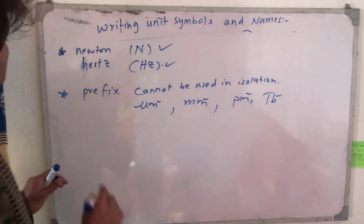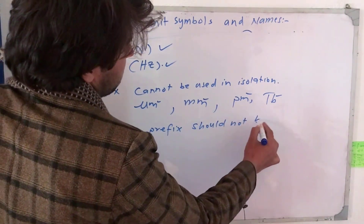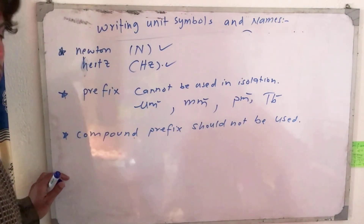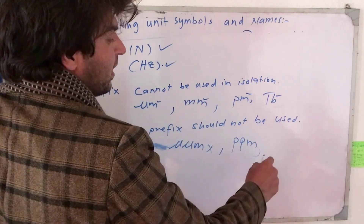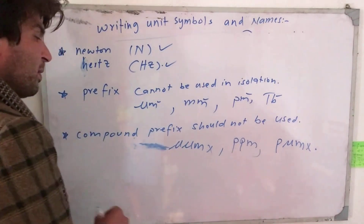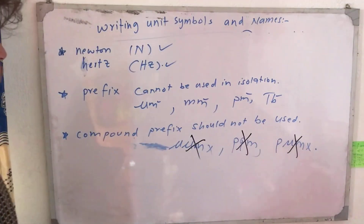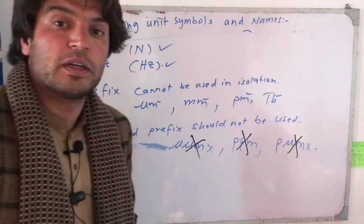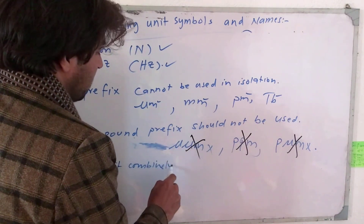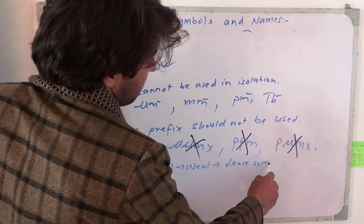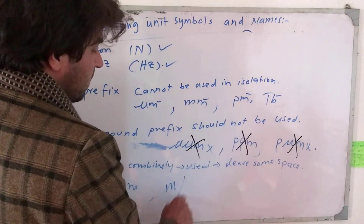Compound prefixes should not be used. For example, micro-micro meter is not valid, and pico-micro meter is not valid. Compound prefixes are not permissible — not allowed. However, when you combine two units — two units with a space between them — it is okay. Leave some space between two combined units. For example, Newton meter uses a dot or space, and meter per second uses a slash for division.